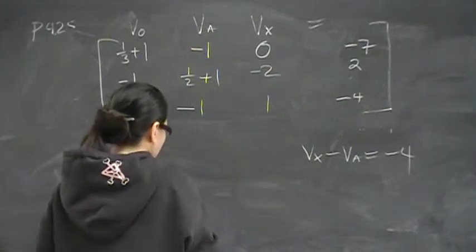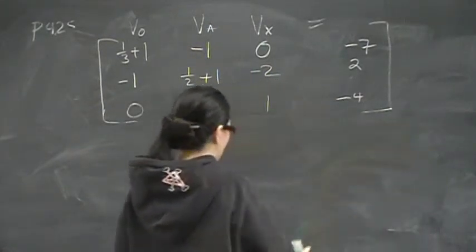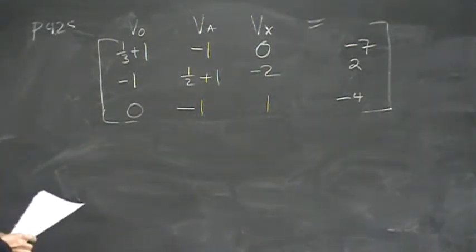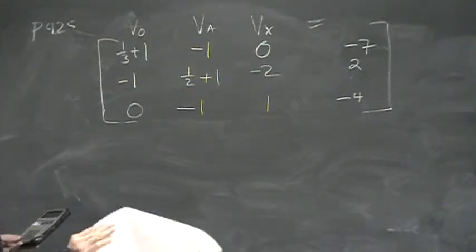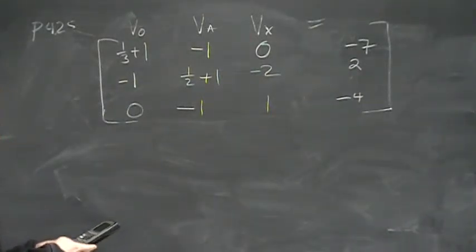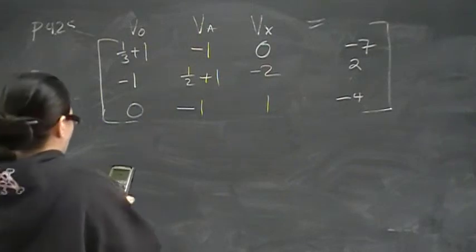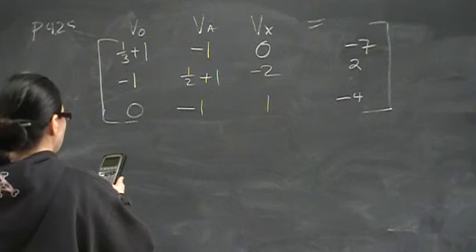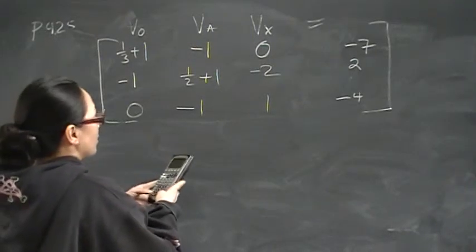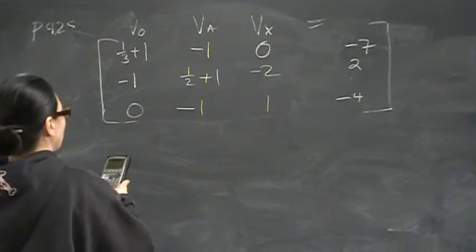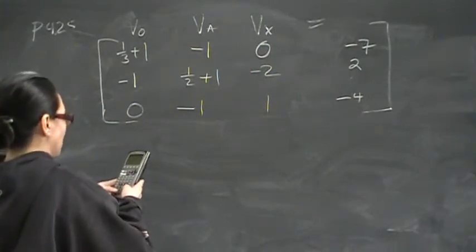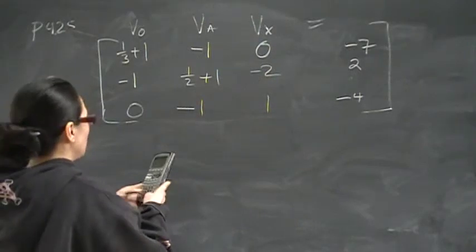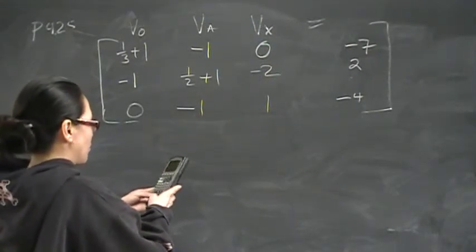Let me double check, because so many times I get it right on my paper and then I'll get a typo in the video. So I guess the best way is for me to do the math and make sure that this matrix will give me the right answers, which I modeled in spice. So we need three equations, three unknowns: 1/3 plus 1, negative 1, 0, negative 7; negative 1, 1/2 plus 1, negative 2, 2; 0, negative 1, 1, negative 4. Solve.